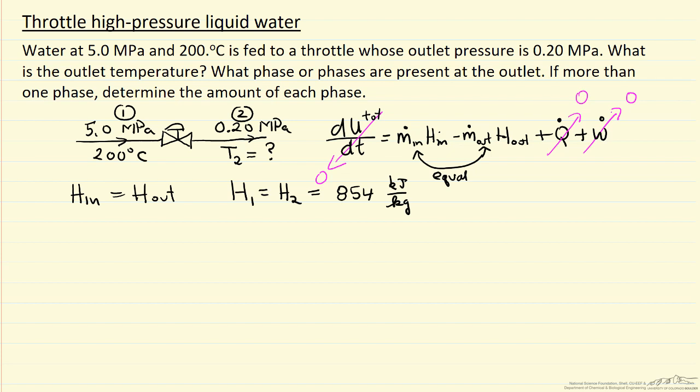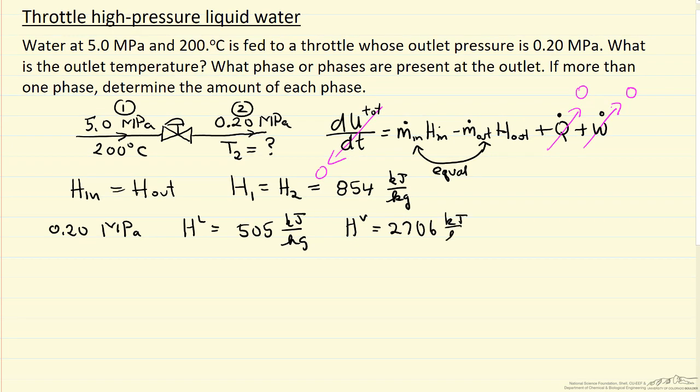Well we concluded it should be at saturation temperature and the other way of demonstrating that is we can look up at 0.20 megapascals, enthalpy liquid per kilogram 505 kilojoules per kilogram. Enthalpy of the vapor 2706 kilojoules per kilogram. And delta H of vaporization is just the difference between these two 2201 kilojoules per kilogram.